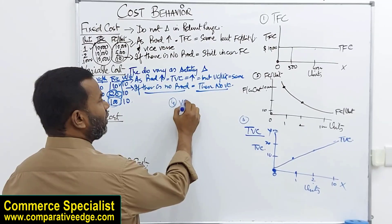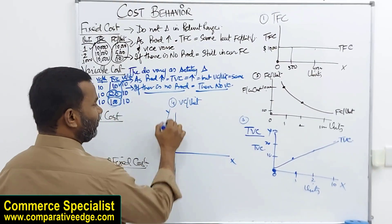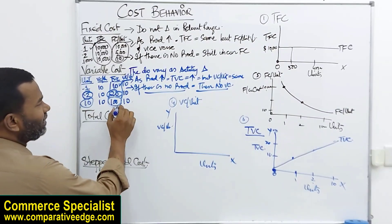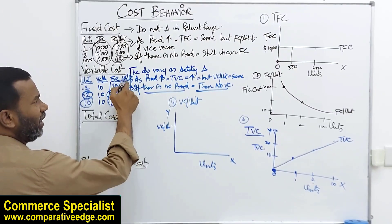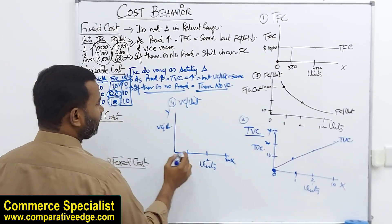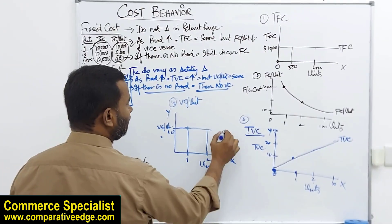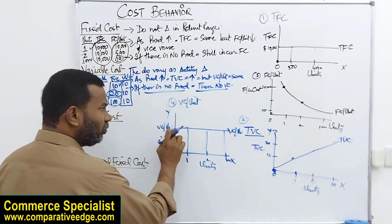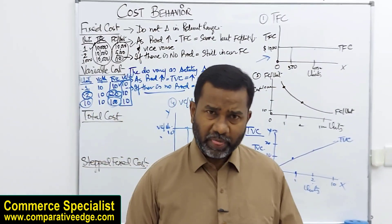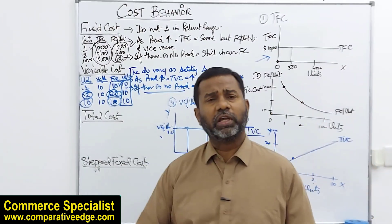If I try to plot variable cost per unit: on the x-axis I have units, on the y-axis I have variable cost per unit. Variable cost per unit is 10 no matter how many units I make — whether one unit, two units, or 100 units, variable cost per unit is 10. So the variable cost per unit line is parallel to the x-axis, just like total fixed cost.